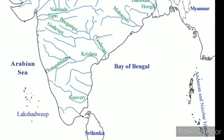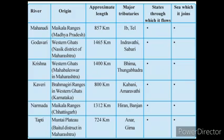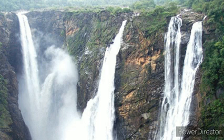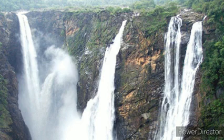The Peninsular Plateau is also the source region of many rivers, generally known as Peninsular rivers. Based on the given map, let's complete the chart. In these Peninsular rivers, Godavari is the longest. Waterfalls are common in most Peninsular rivers; the highest among these is Jog Falls on the Sharavathi river in Karnataka.